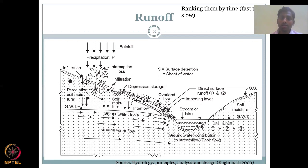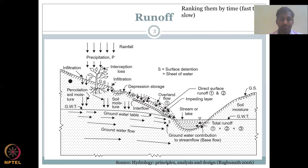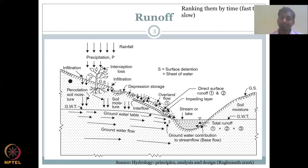What happens if the water hits the surface and there is no slope? Then it becomes detention — a depression storage. While going through all these parameters, think about how and where water can be locked or stored in your landscape. Depression storage could be a way to capture this runoff and store it for future use by farmers, like a farm pond.